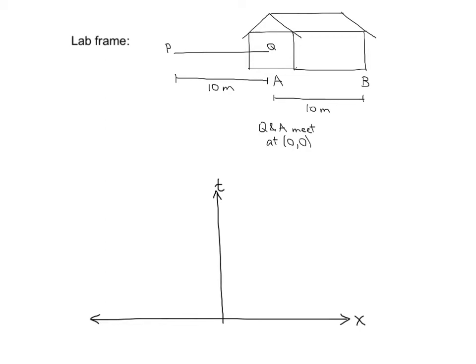In the lab frame, points A and B do not move. They are stationary because the barn is stationary. This means that the world lines for A and B will be as shown in red. A is always at the 0 meter mark in terms of x and progresses forward in time, and B is always at the 10 meter mark and progresses forward in time.